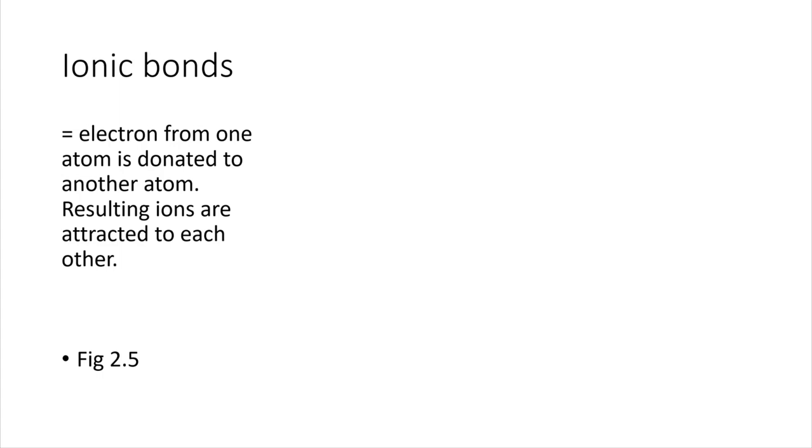The first type of bonding we're going to describe is ionic bonds, and this is the sort of bond that we get when one atom completely donates an electron to another atom, so it literally just hands it off.